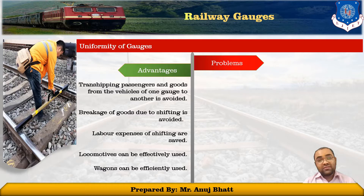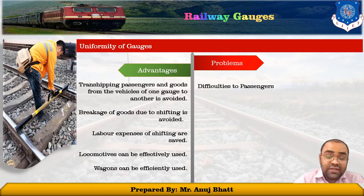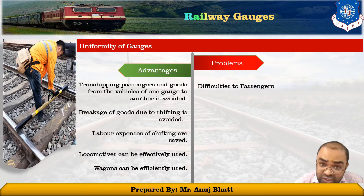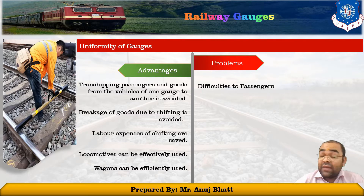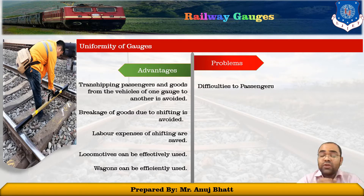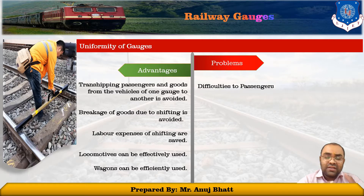Now looking at the problems caused by non-uniformity of gauges. First, difficulty to passengers: at the point where there is a change of gauge, passengers are required to move from one train to another. This transfer involves difficulties like getting accommodation in the new train, transferring luggage, and climbing staircases over bridges or changing platforms. This also leads to time gaps between two trains, enhancing the total journey duration.